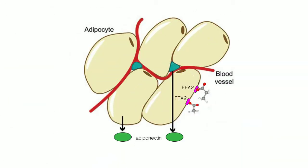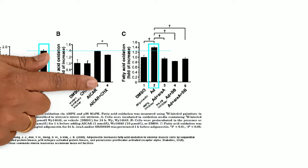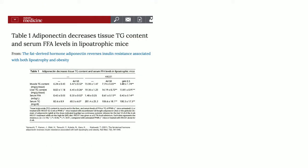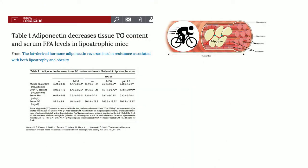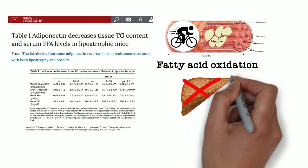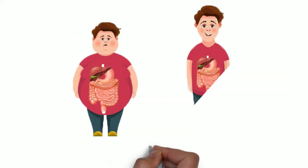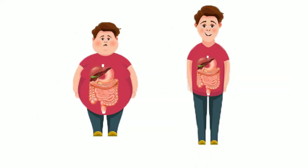SCFAs also induce adiponectin in adipose tissue. Adiponectin increases fatty acid oxidation in skeletal muscles and suppresses lipid accumulation in the liver.